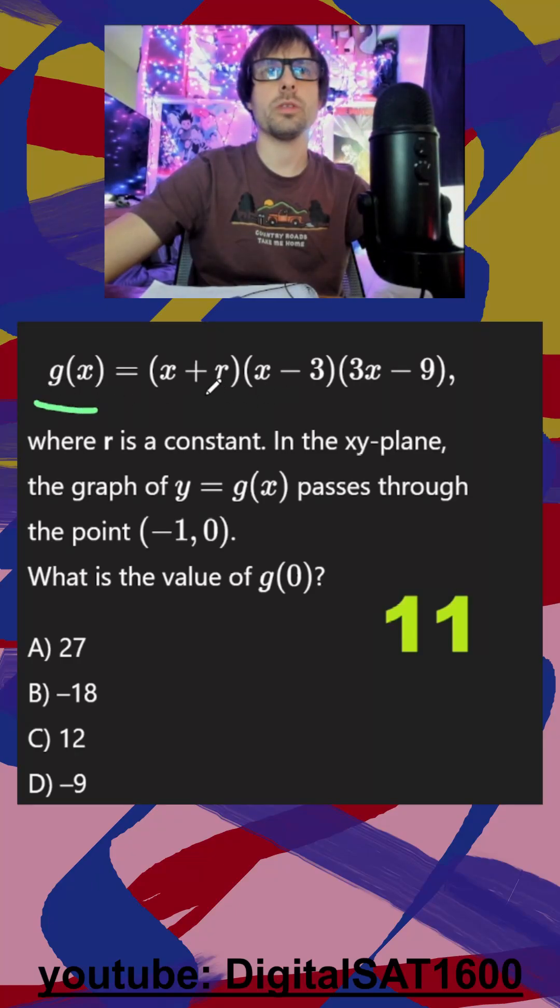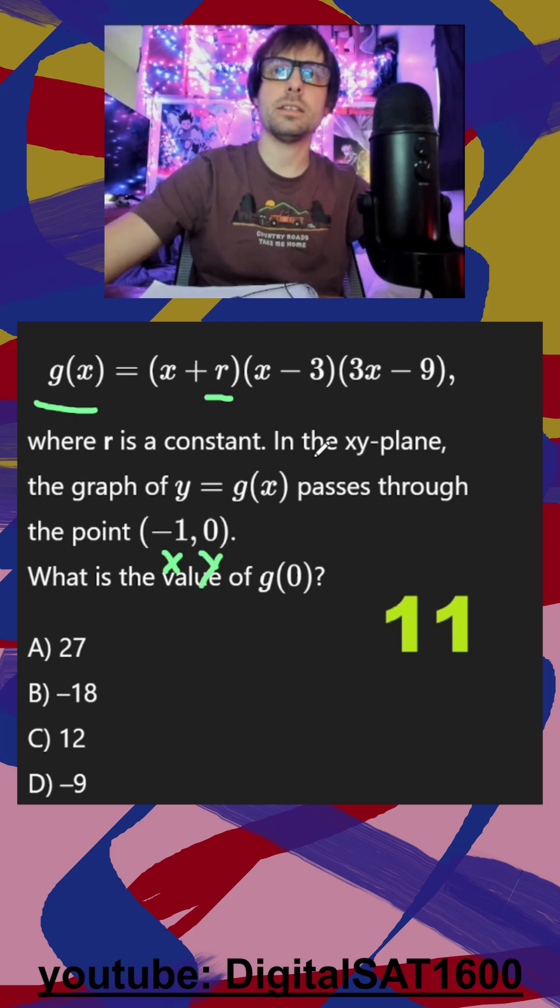I see a big g of x function with one constant r. They also tell us that this passes through the x, y point. So technically, I could already plug in negative one for x, zero for y, I could solve for my r value.